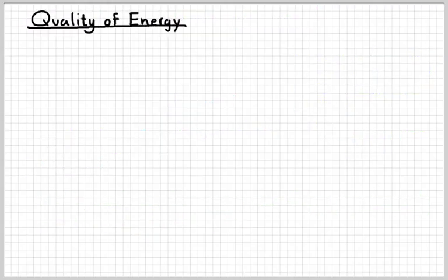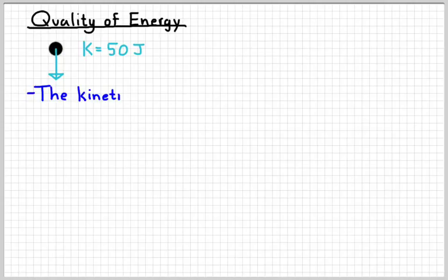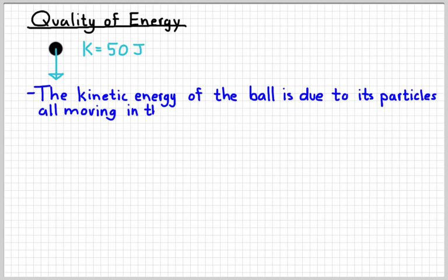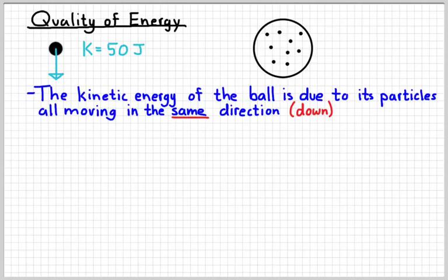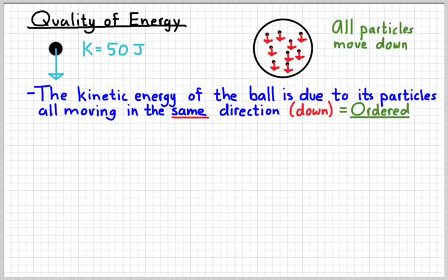So let's talk briefly about the quality of energy, like how useful are these different kinds of energy. If we consider the kinetic energy of a billiard ball that's falling, the kinetic energy of the billiard ball is due to all of its particles moving in the same direction. In other words, all the particles in the ball are moving downward with the same velocity. So if we took the microscopic picture, like we zoomed in on the billiard ball and we could see its molecules, the particles that make it up, they're all moving downward. And so the fact that they're all moving in the same direction tells us that it is an ordered system.